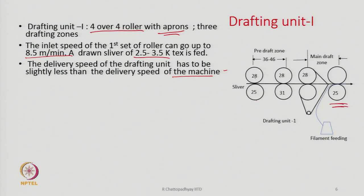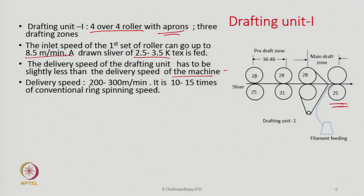The front rollers can go up to 200 to 300 meters per minute as claimed by machine manufacturers, but commercially people typically keep 180, 200, 220, or 250 meters per minute. Depending upon the count we want to spin and the type of sliver and fibres being processed, the right speed can be chosen.